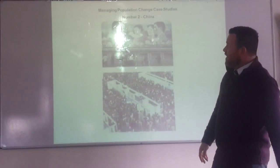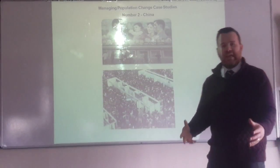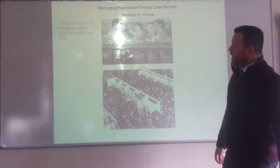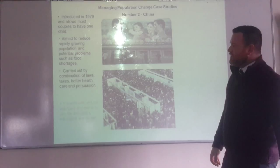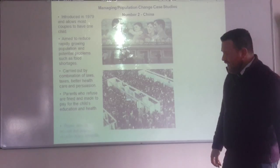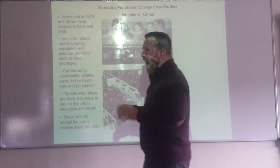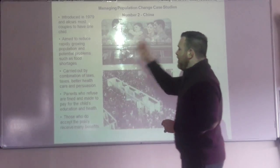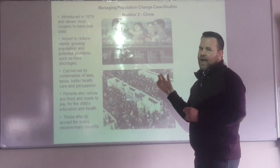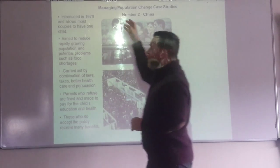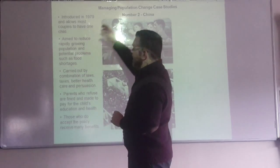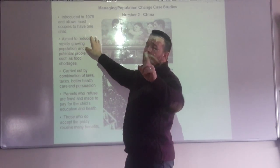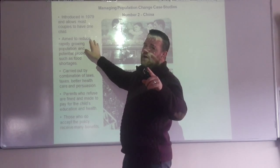For population management, the big case study is China and the one-child policy. What you tend to be asked is how it was carried out — what were the features of the scheme — and then how successful it was, and what impact it's had. The features of the scheme were to encourage people to have just one child because of rapid population growth, aimed at reducing that rapidly growing population and therefore potential problems such as food shortages. It was introduced in the late 1970s, in 1979.